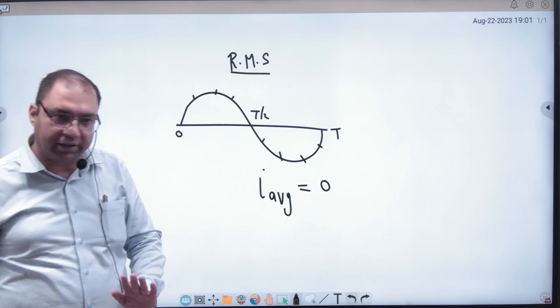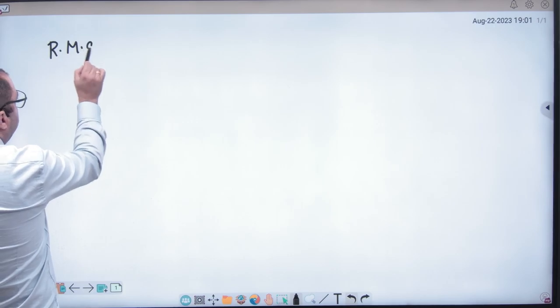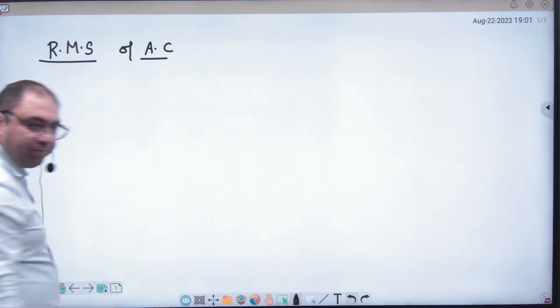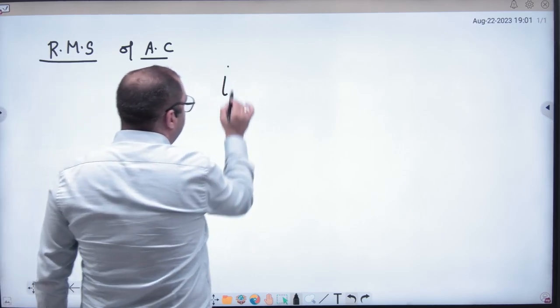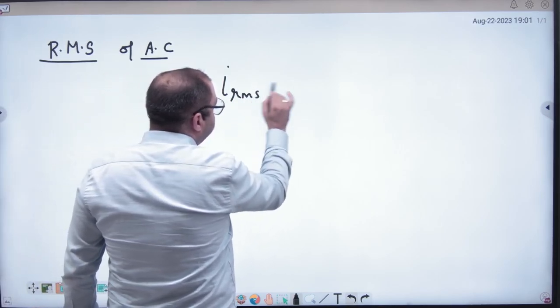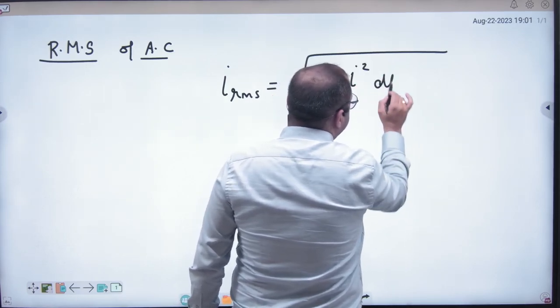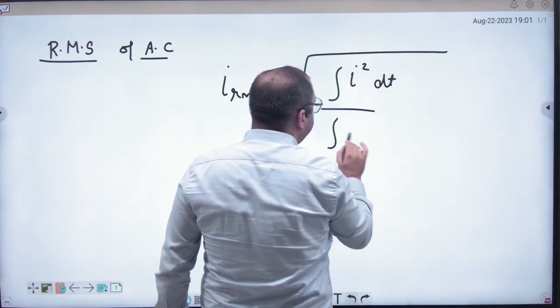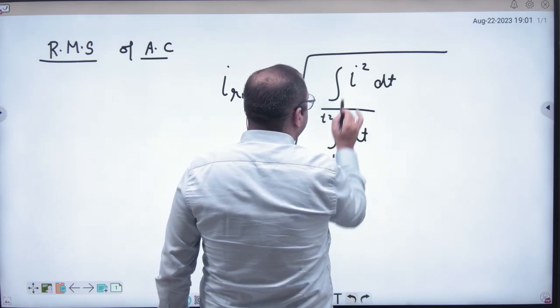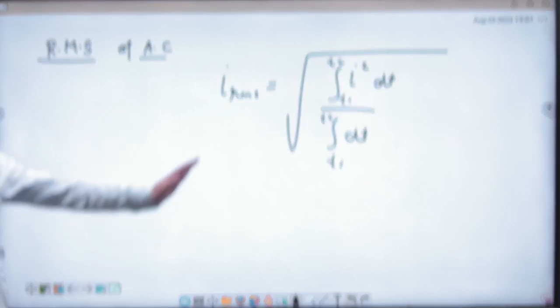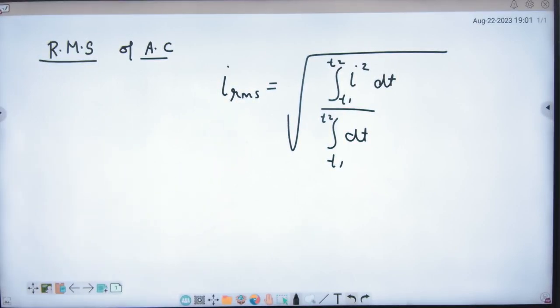Rule number one: if I have to take the root mean square value of alternating current, please note the formula in your booklet. i_rms equals the square root of the integral of i² dt from t1 to t2, divided by the integral of dt from t1 to t2. Please note this formula — this is the RMS current formula.